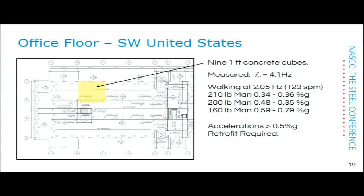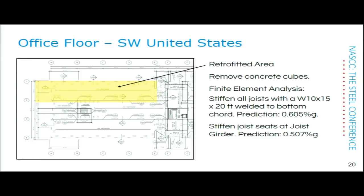There was also a woman who could really get the floor moving, and they didn't want me to ask her to walk that particular day. The measured accelerations were greater than 0.5% G, and it was decided to retrofit the building. Through finite element analysis that Dr. Davis performed, we determined that welding W10x15 sections, 20 feet long, to the bottom chords of the joists could reduce the predicted acceleration to just over 0.6% G. Then stiffening the joist seats on the joist girder to increase composite action between the concrete slab and the joist girder could get it down to just over 0.5% G.